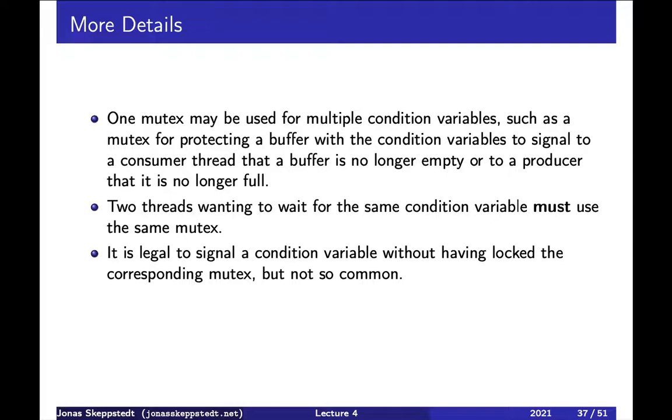And some more details. One mutex can be used for multiple condition variables, and if two threads want to wait on the same condition variable, they must use the same mutex. And it's also legal to signal a condition variable without having the corresponding mutex, but that may not be the most common case.